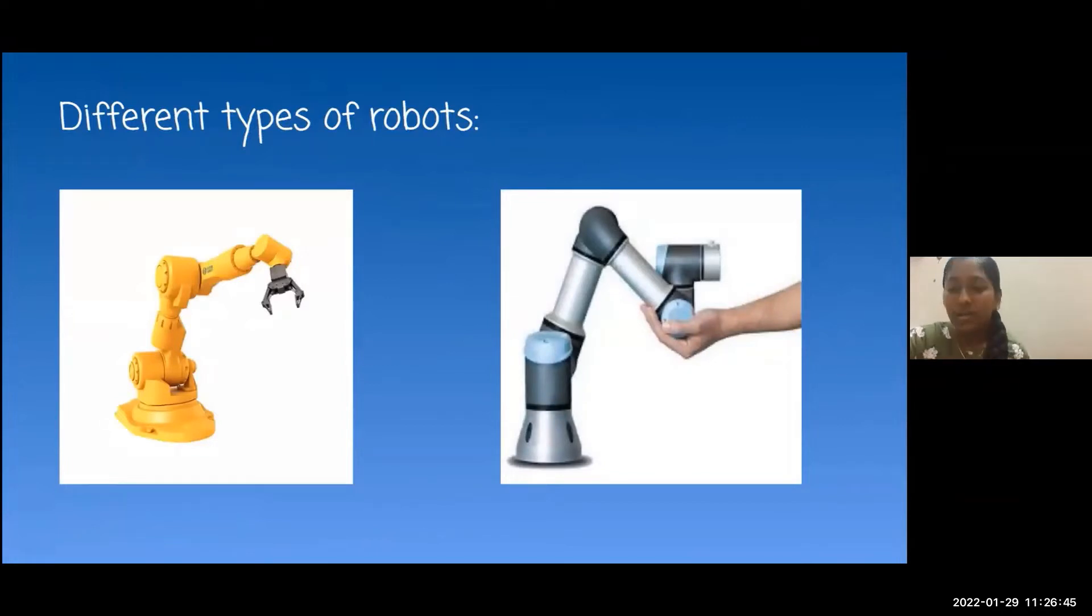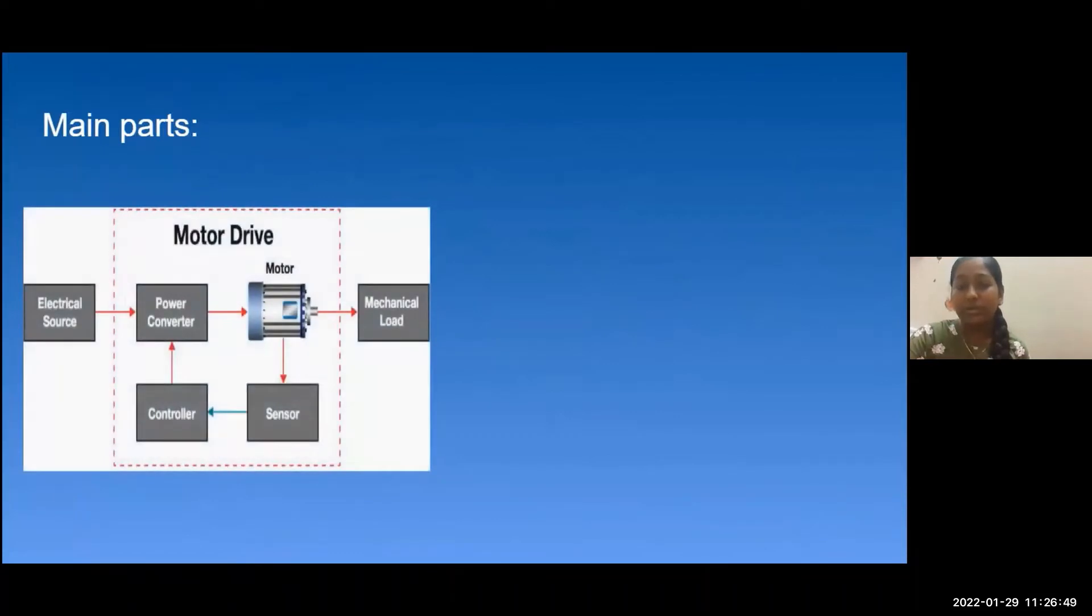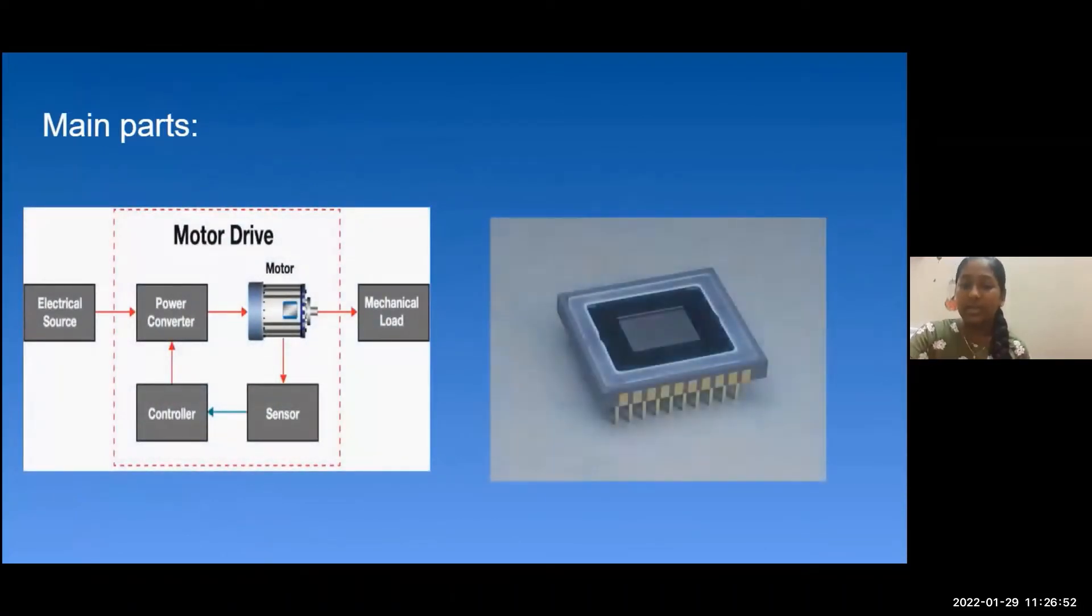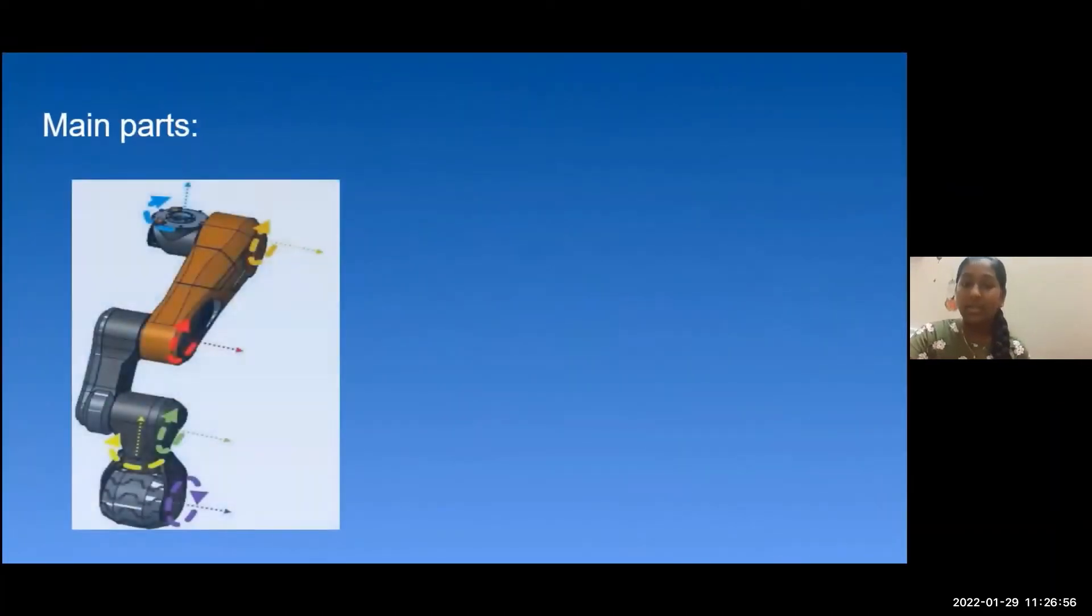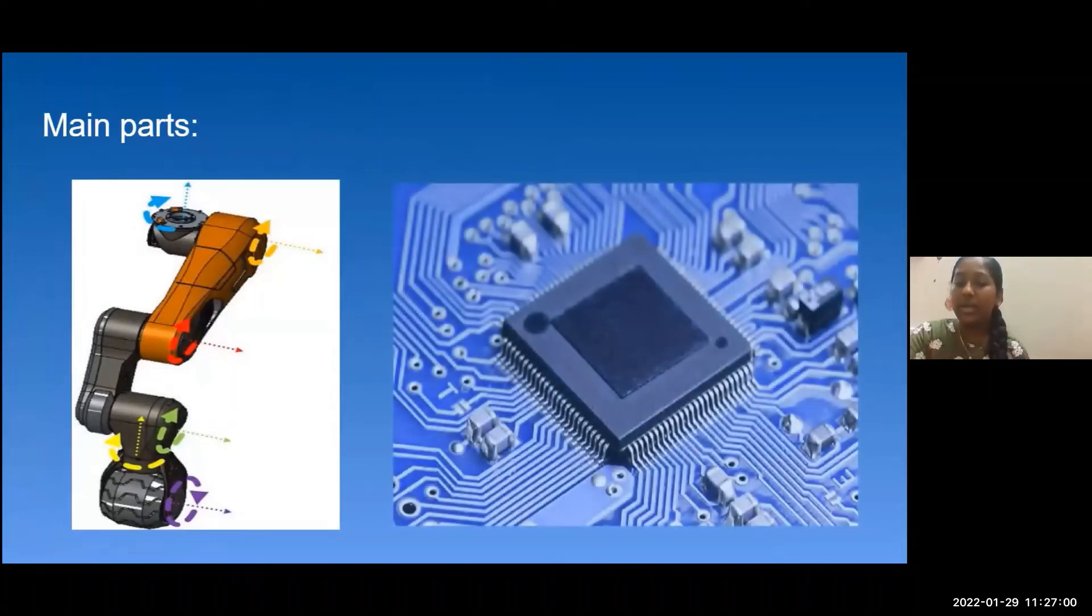The main parts that are usually used in robots are motor drive for movement, sensors for recognizing, arms, joints and legs to make it move, and microcontroller for programming.